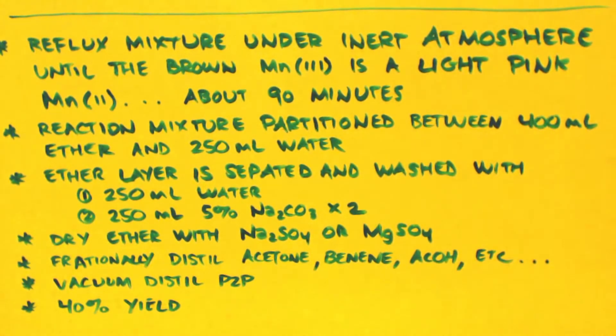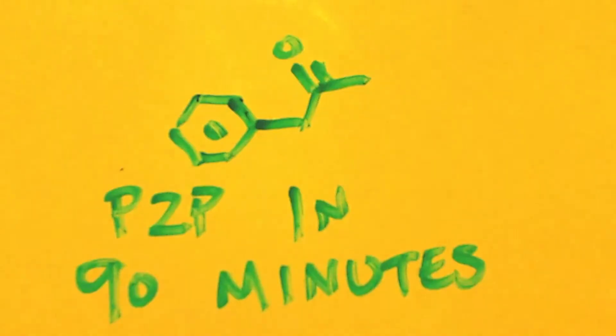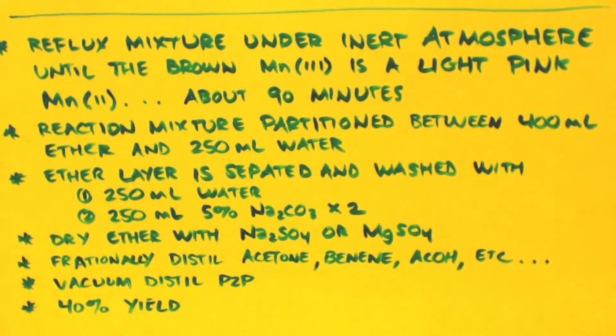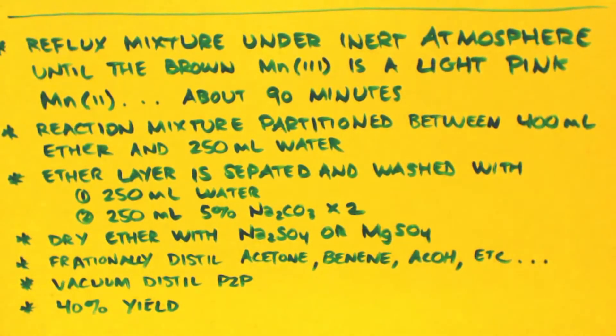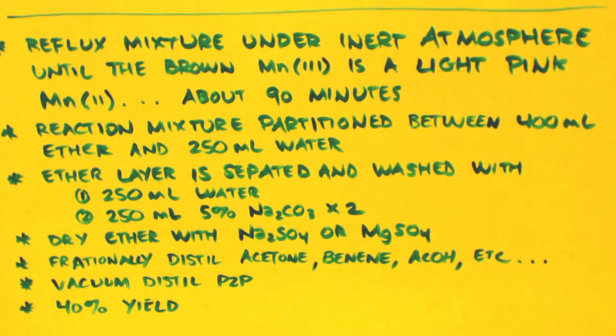Next it says to fractionally distill out your stuff - you can have extra acetone in there that you can reuse, benzene, acetic acid. Actually the acetone and the acetic acid will probably be in the water layer, so you would have gotten rid of that with these washings. But the benzene is non-polar so it'll be with your product - distill all that stuff out so you can reuse it. Then continue to distill until you get your P2P. You'll have 40% yield which is 1.34 grams. The 40% yield is based on the Mn(III) acetate.